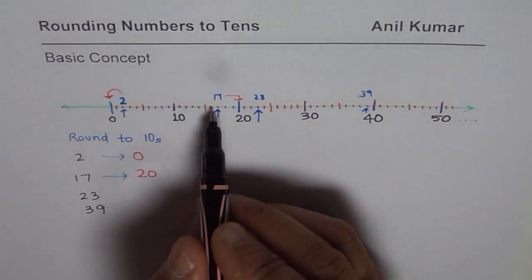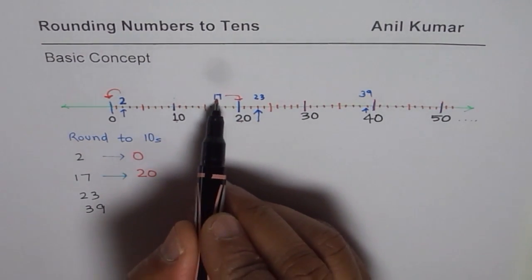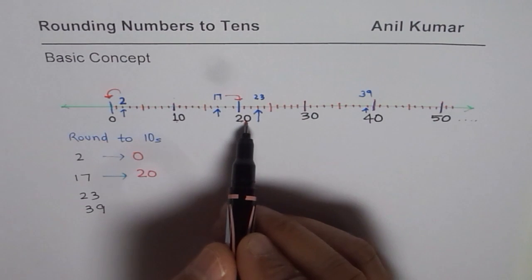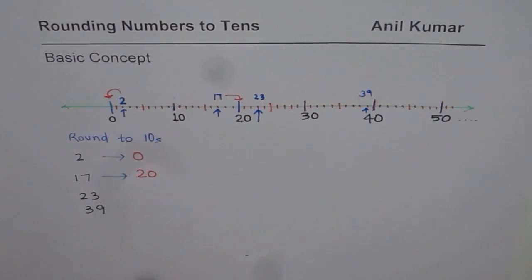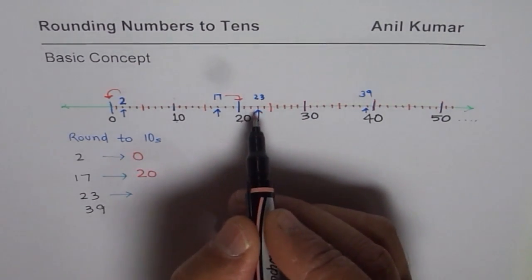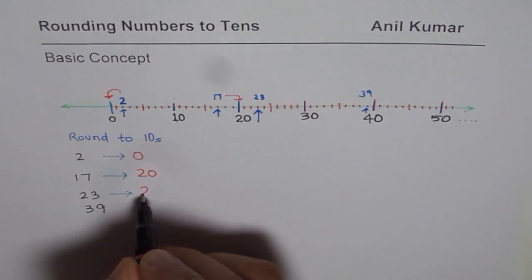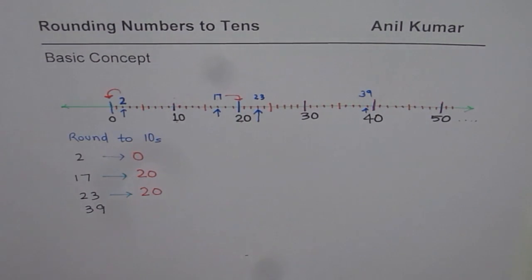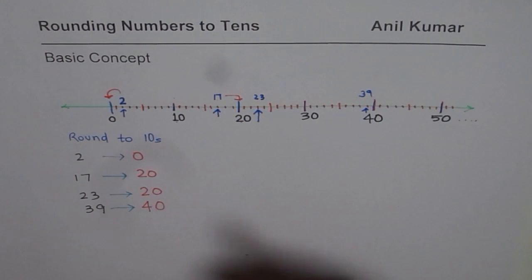So that is how we actually round the numbers. We check the number. Number in this case is 17. 17 could be rounded to either 10 or 20. It is in between 10 and 20. Since it is closer to 20, we round it to 20. Now, let's do number 23. 23 is between 20 and 30. 23 is closer to 20. So that will also get rounded to 20. How about 39? 39 is very close to 40. So there is no problem in writing that as 40.